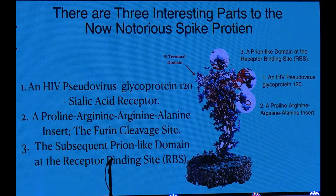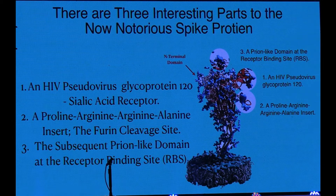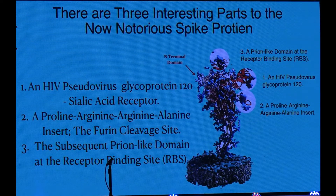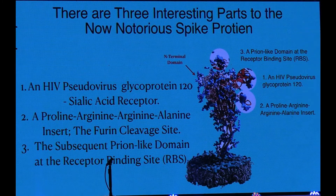The PRRA insert — proline, arginine, arginine, alanine — those are four amino acids. Every amino acid has three nucleotide bases, so that's 12 mutations occurring one at a time. Sickle cell anemia is a single base change and made a significant difference; this is 12. The furin cleavage site is critical to getting this thing taken into a cell.